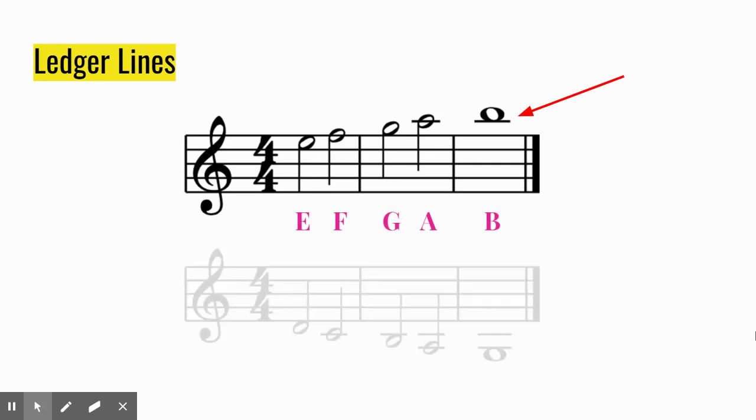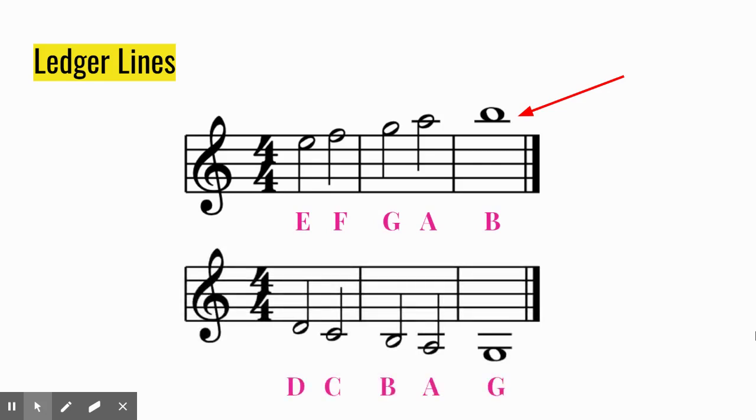Ledger lines can also extend lower. Notice now how the names move backwards in the alphabet because the notes are going lower. These are the lowest notes that your violin is capable of playing. Violins can't go lower than that G there.